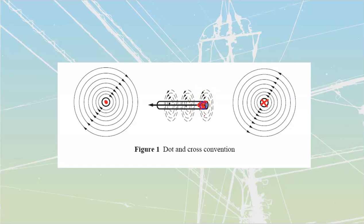Cross is going to be an arrow flying away from you — the feathers on the back end of the arrow. Dot is going to be the very tip of the arrow coming towards you. So when looking at a cross-section of a conductor, if I see the dot, that's current coming towards me; if I see the cross, that is the current moving away from me. Use your left hand right now to verify the direction of magnetic flux around each of these conductors.